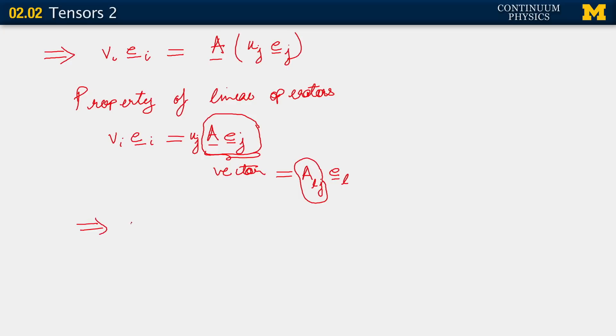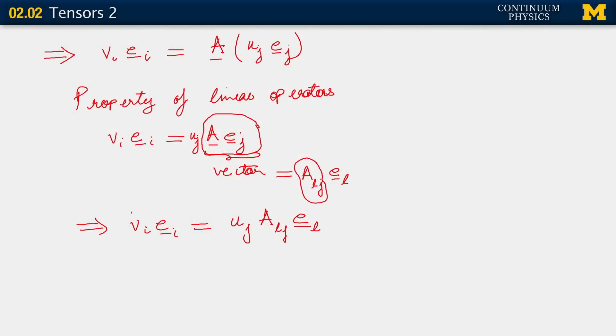This implies that our representation allows us to write V_I E_I equals U_J A_LJ E_L, where the summation convention is implied everywhere. Now, to isolate just the components, I can dot this entire equation with some basis vector. To keep things general, I'll use a new index and dot everything with E_K.